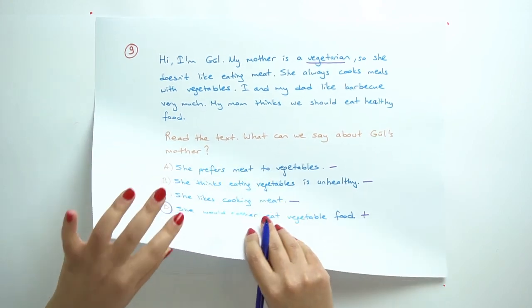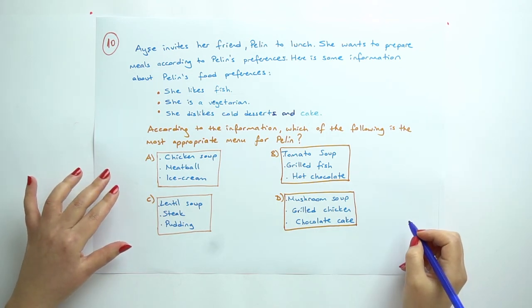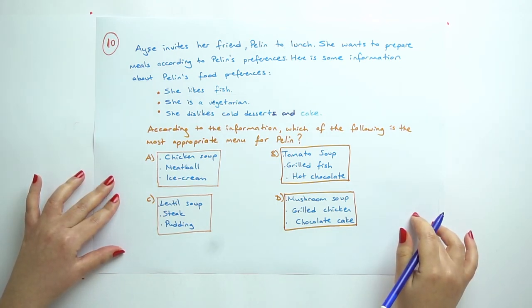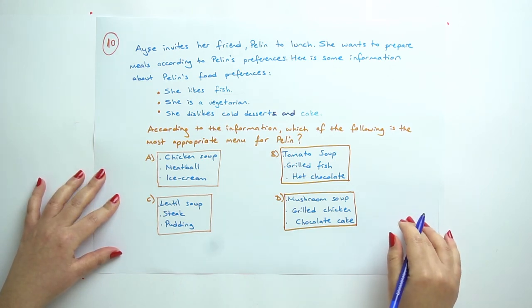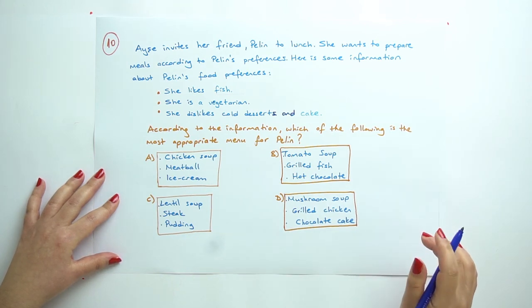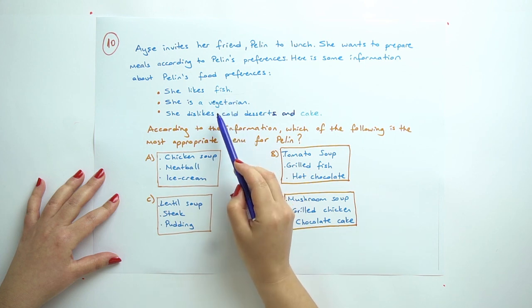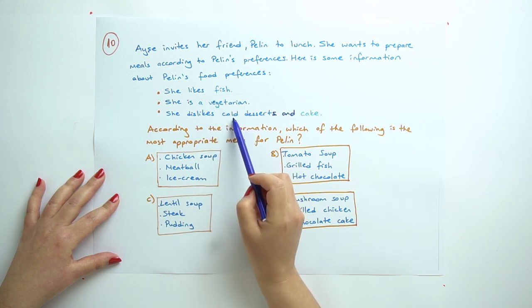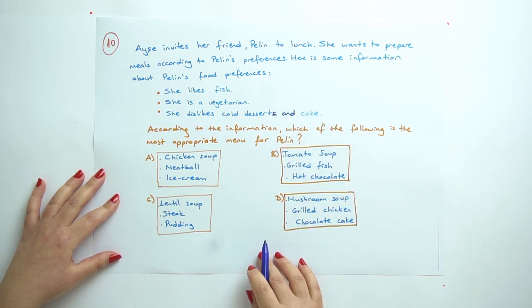So the last question. According to the information, which of the following is the most appropriate menu for Pelin? Aisha invites her friend Pelin to lunch. She wants to prepare meals according to Pelin's preferences. Here is some information about Pelin's food preferences: she likes fish, she is a vegetarian, she dislikes cold desserts and cake.